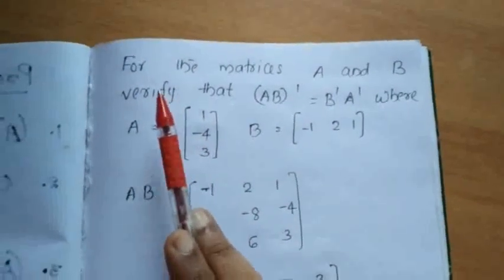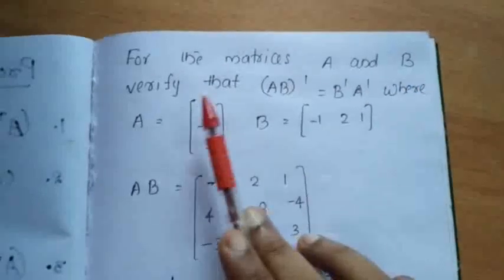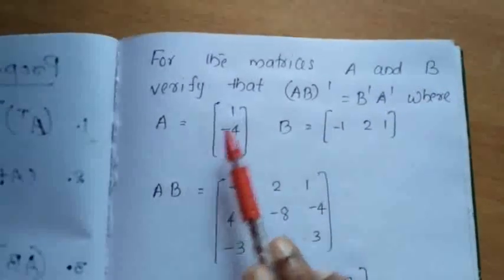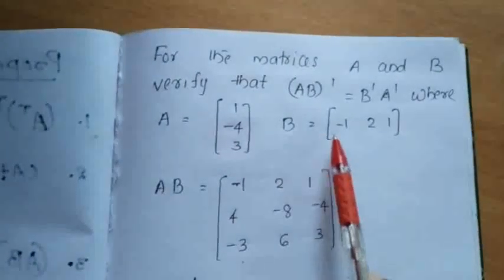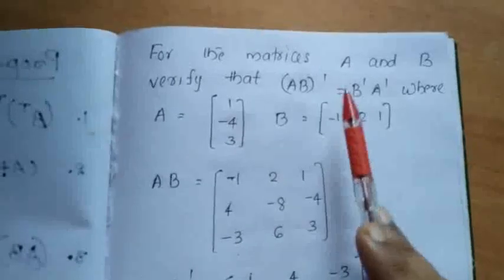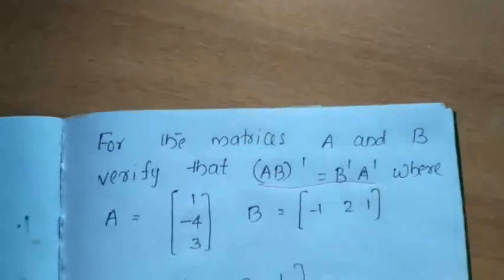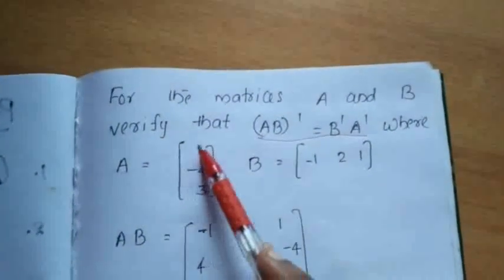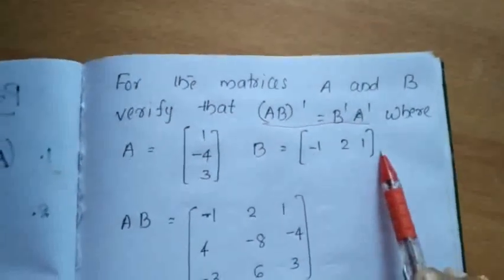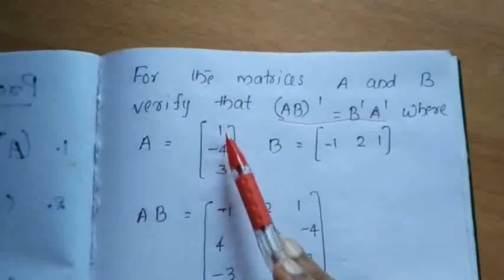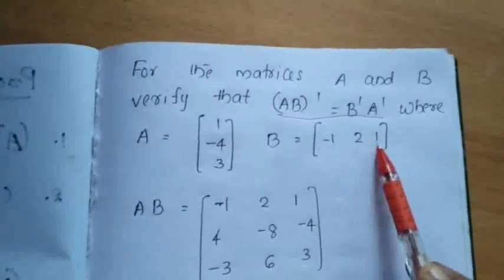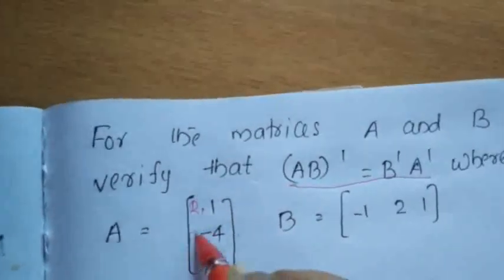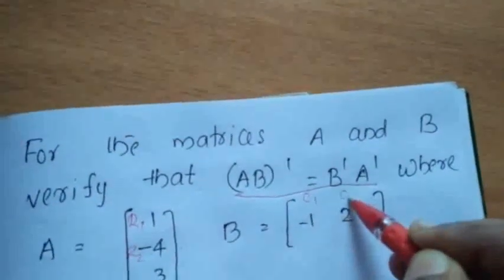Here one question is given: for the matrices A and B, verify that (AB) transpose is equal to B transpose A transpose, where A equals [1, -4, 3] (a column matrix) and B equals [-1, 2, 1] (a row matrix). So we need to verify this. AB means A into B. Here A has one column and one row, with three rows and three columns respectively. We label rows R1, R2, R3 and columns C1, C2, C3.